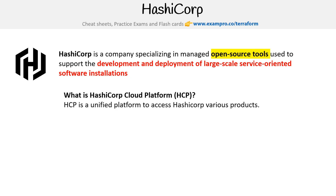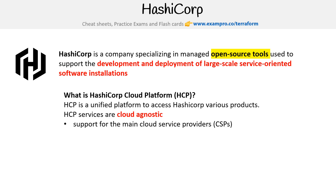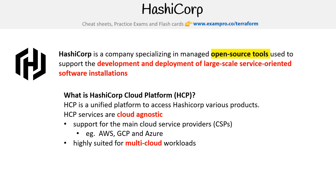HCP is a unified platform to access HashiCorp's various products. The main thing is that it's cloud agnostic, so HashiCorp makes it really easy to build cross-cloud. They have support for all three main providers: AWS, GCP, and Azure — and more, like Kubernetes. They're highly suited for multi-cloud or cross-cloud workloads.